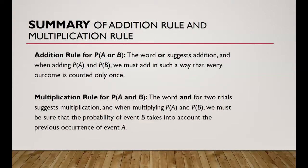In summary, the addition rule is denoted as P(A or B) — the word OR suggests addition. When adding P(A) and P(B), every outcome must be counted only once, so we subtract the overlap. The multiplication rule is denoted as P(A and B) — the word AND suggests multiplication. When multiplying P(A) and P(B), we must account for the probability of B given the previous occurrence of A.